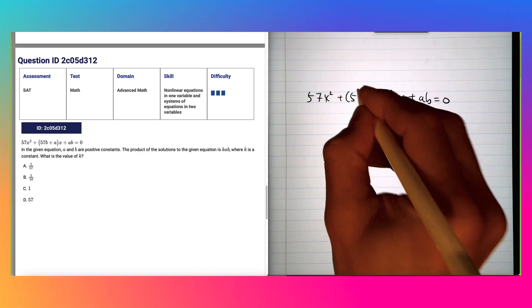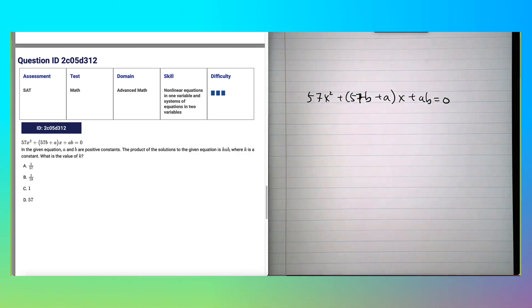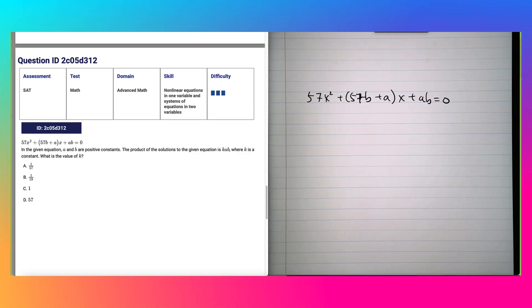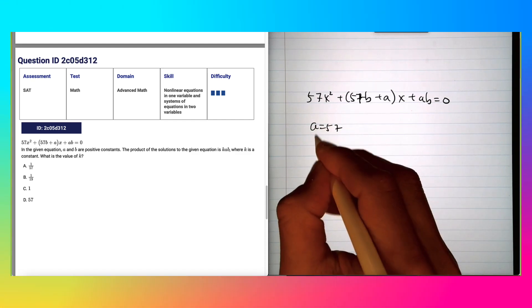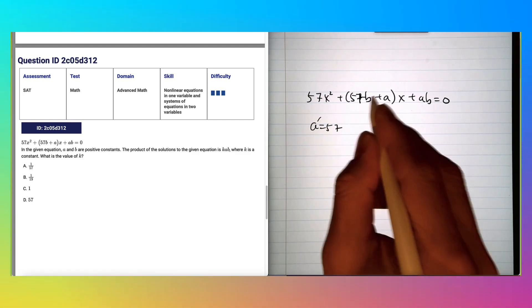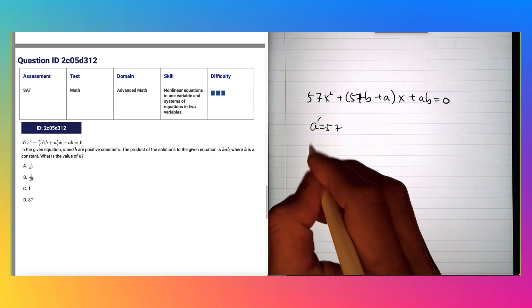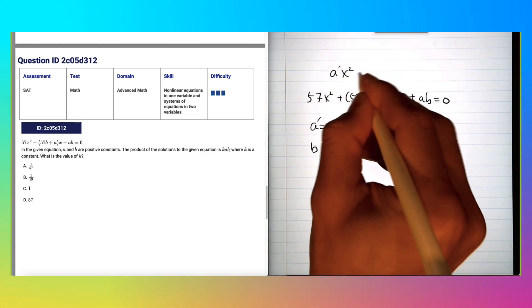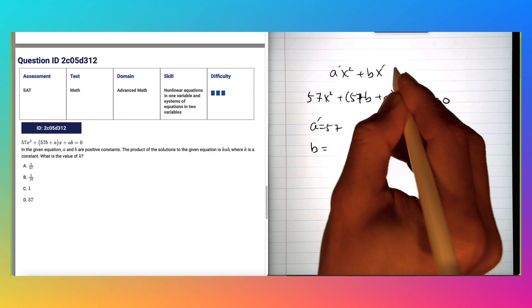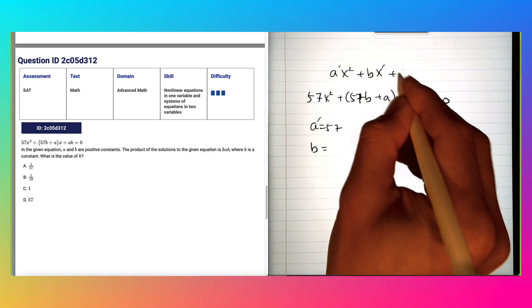Now it doesn't look very obvious to many of you that this is really a standard form. So we have a equals 57. I'm going to just call it a prime because they use a bunch of a and b. a prime and b prime assuming that you have a prime x squared plus b prime x plus c equals zero.